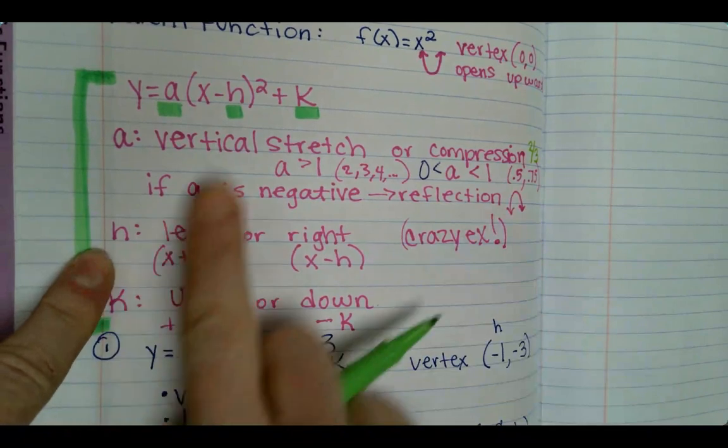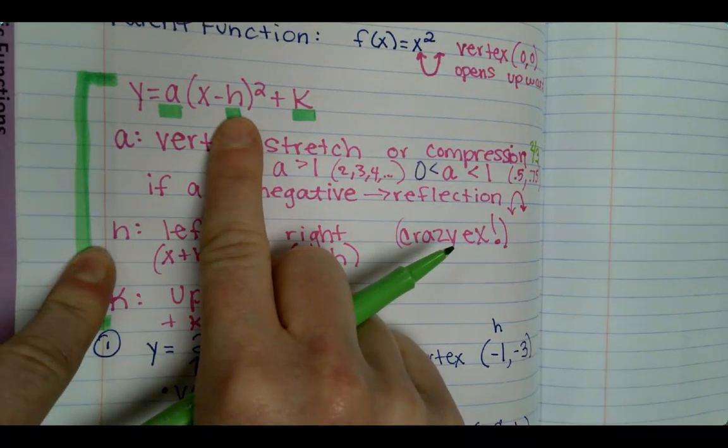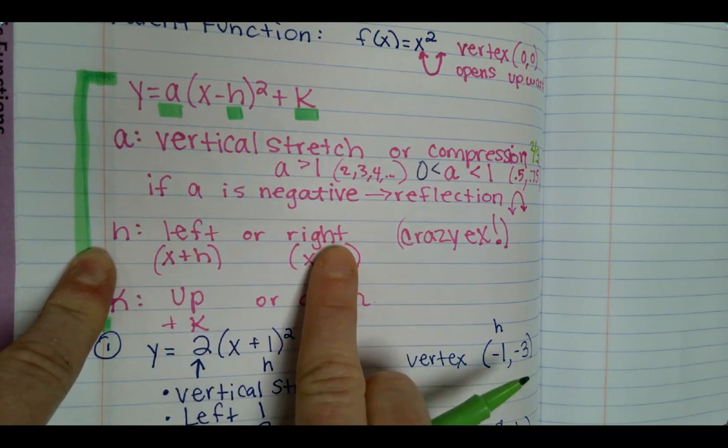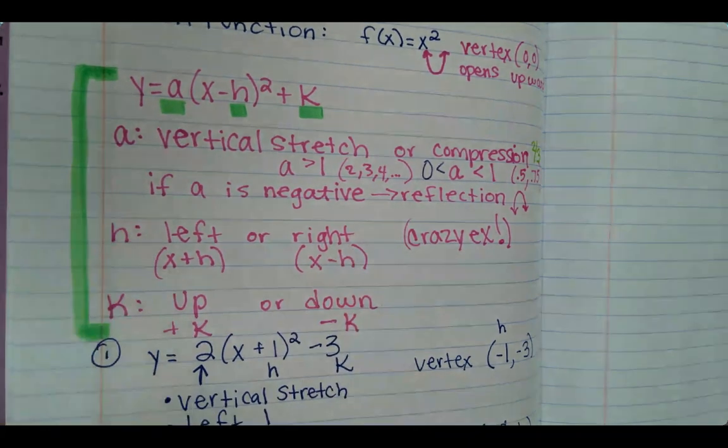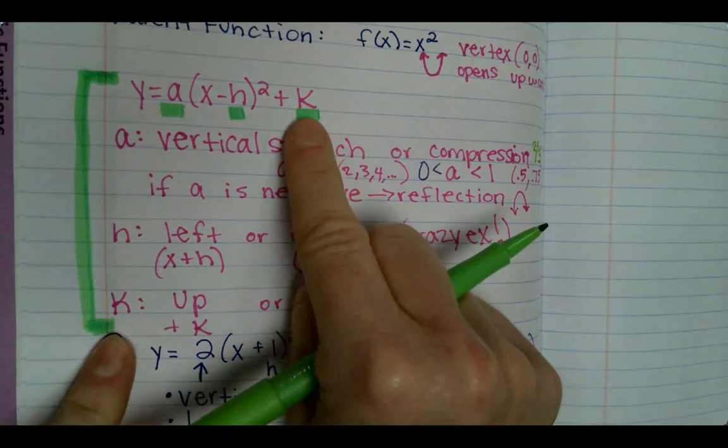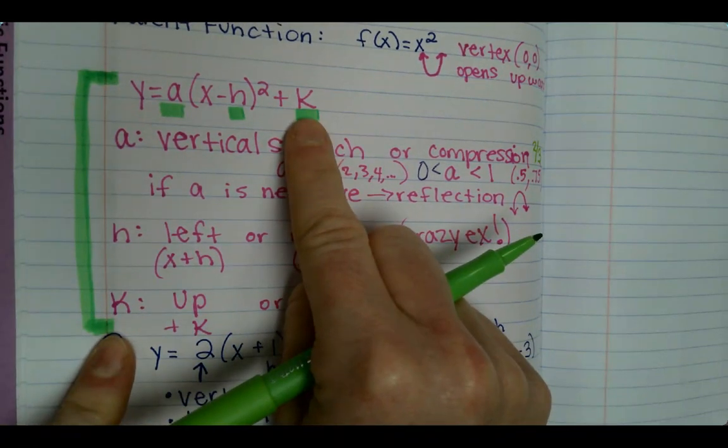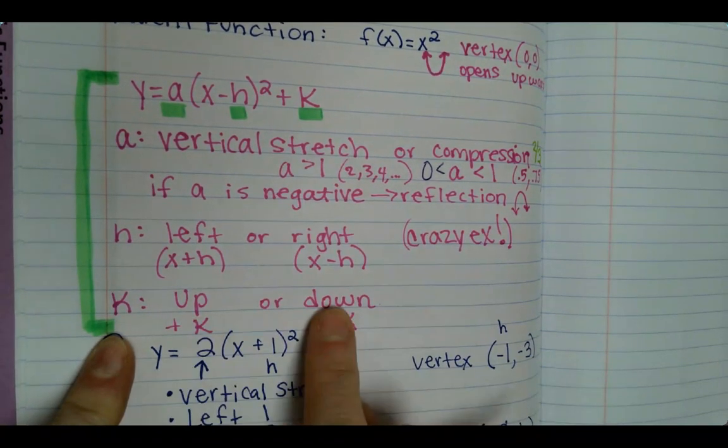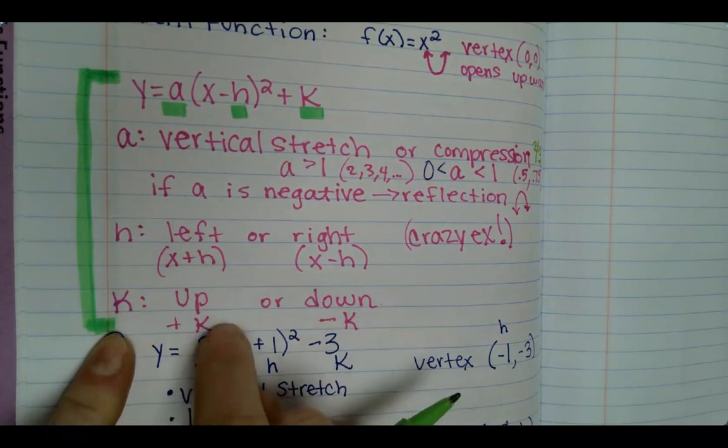And that h, which is the one inside the parentheses, it's your crazy ex. It determines left or right, so it does the opposite of what you would think. And then the k at the very end, it's not inside the parentheses, that determines the up and down. So you'll use this on your assignment.